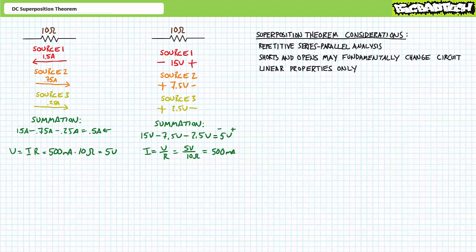Before you run off under the mistaken assumption that the superposition theorem is the best thing since they replaced the turd brown M&M with a blue one, the principal disadvantage is that it requires independent analyses of the same circuit from the perspective of each source. Two sources means two independent analyses and a final summation. Three sources means three. If your circuit has 100 sources, you may wish to investigate the use of a computer. Other circuit analysis techniques like mesh and nodal analysis can yield the same results in a single admittedly convoluted step.